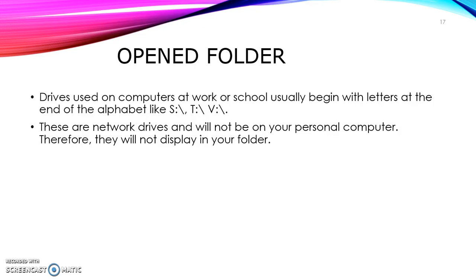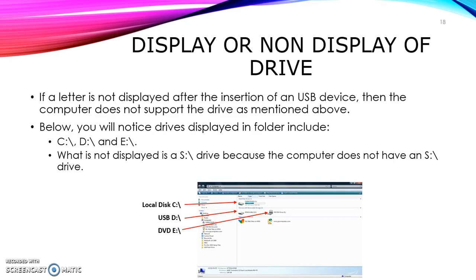If a letter is not displayed after the insertion of a USB device, then the computer does not support the drive. You will notice drives displayed in your folder like your C drive, your D drive, your E drive. What is not displayed is your S drive, because the computer does not have an S drive. Your computer at work or school may have one, but your personal computer at home will not have that particular drive.